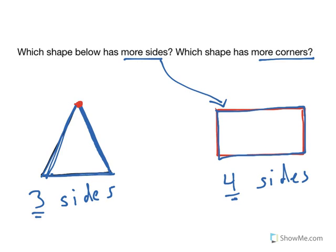So I have one corner at the top of the triangle, one at the bottom right, and one at the bottom left. This has three corners, just like it has three sides.